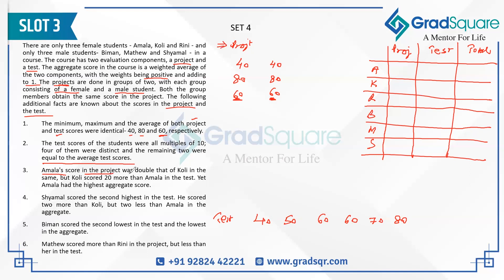Third statement: Amala's score in project was double that of Coli. The only pair where one number is double the other from our available scores {40, 60, 80} is 40 and 80. So Coli scores 40 on project and Amala scores 80. Since A, K, R are female students pairing with male students, R must be in the remaining pair and gets a project score of 60.